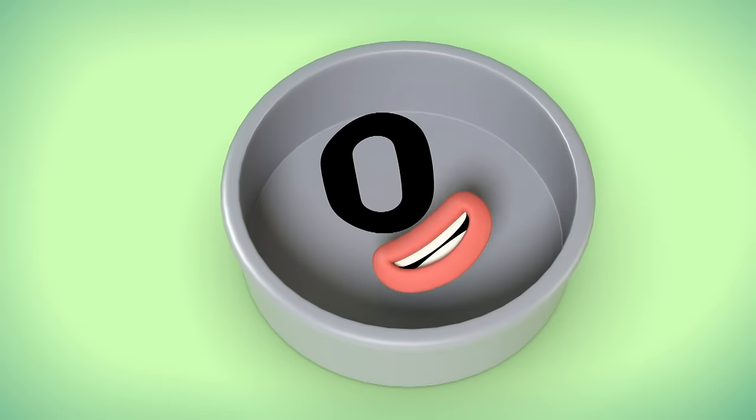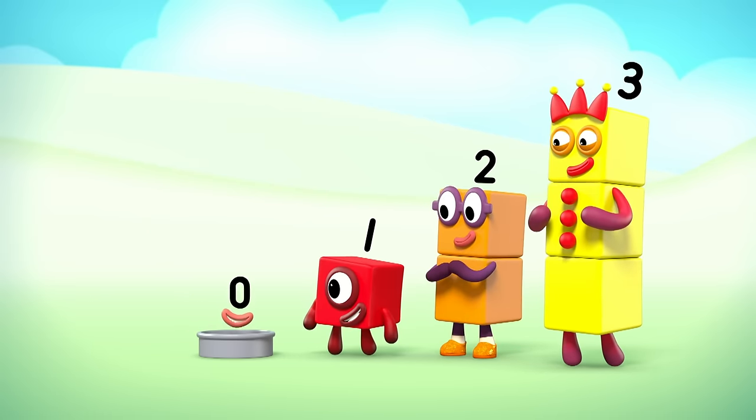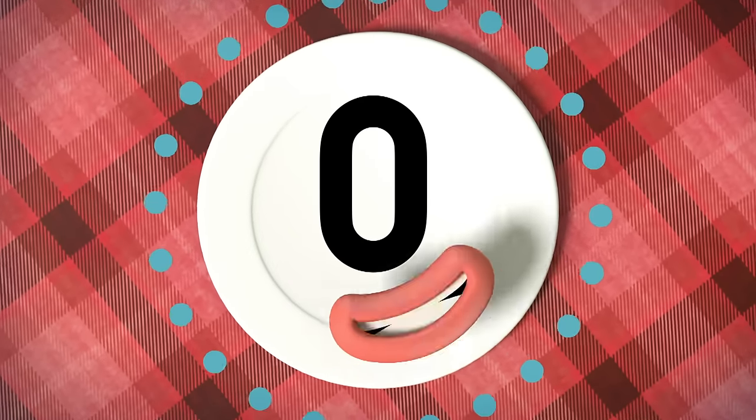I'm the number for nothing, I'm one less than one. When there's nothing of something, I'm the number for none. When there's nothing there to count, none is the amount, you've got zero.